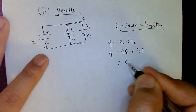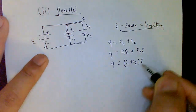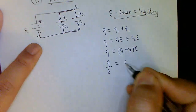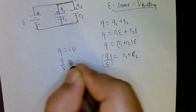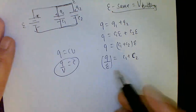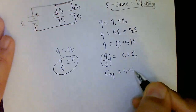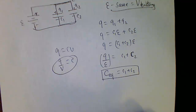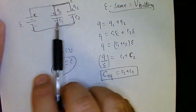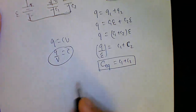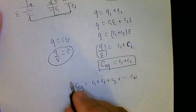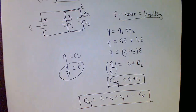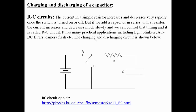Dividing both sides by the battery voltage E, Q/E = C1 + C2, and since Q/V equals capacitance, C_equivalent = C1 + C2. This is exactly opposite to the resistor combination in parallel. In general, combining capacitors in parallel increases the total equivalent capacitance: C_equivalent = C1 + C2 + ... for any number of capacitors combined in parallel.